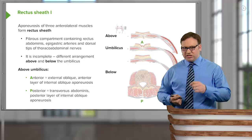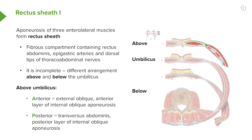We can see that here we have external oblique, here we have internal oblique, and here we have transverse abdominis. Anteriorly, this is the rectus sheath — the aponeurosis of external oblique is anterior, and posteriorly, behind rectus abdominis, we have the aponeurosis of transverse abdominis.